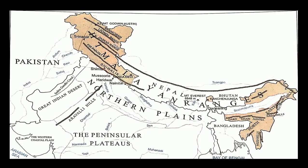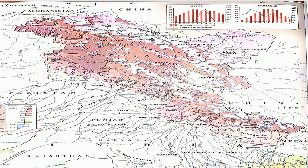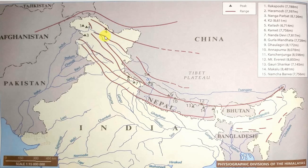There are many glaciers found in this particular region and a number of snow-covered mountain peaks are also here. Mount Godwin Austin, or K2, at a height of 8,611 meters — this is the highest peak in India and the second highest in the world. This peak lies in the Karakoram range.